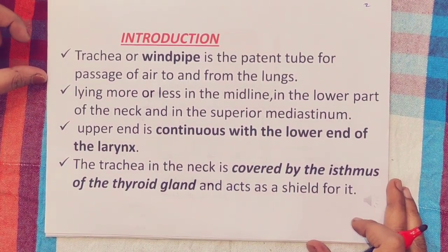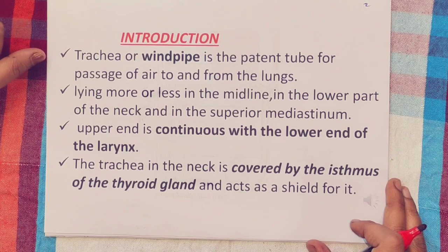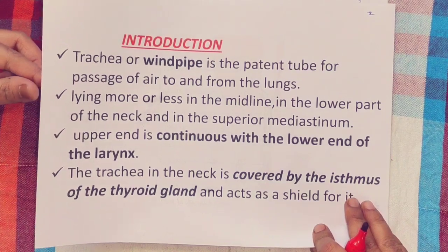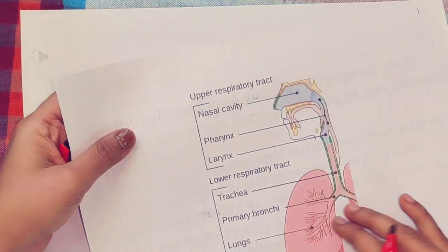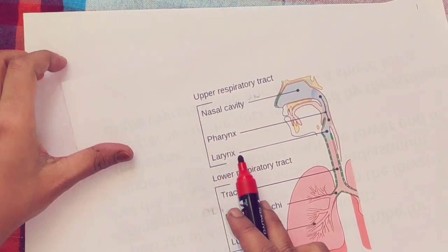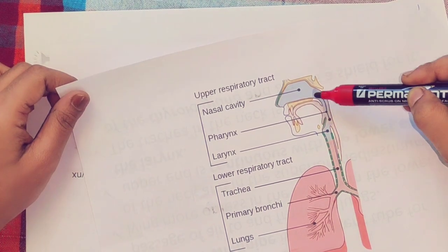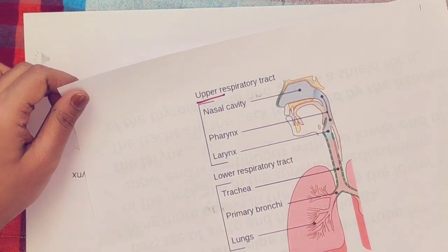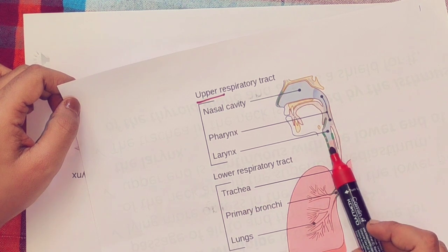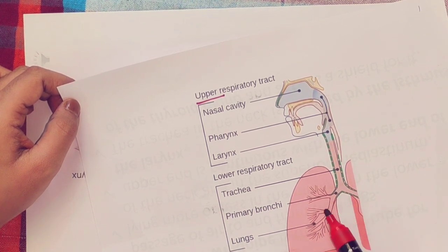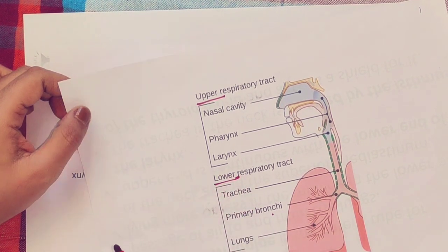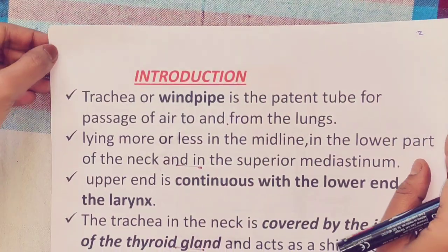Welcome back to the channel. We will see the anatomy of the trachea. We need to know what is the upper respiratory tract and what is the lower respiratory tract. The nasal cavity, pharynx, and larynx compose the upper respiratory tract. Below the larynx is the trachea, which divides into the right and left primary bronchi leading to the lungs — these form the lower respiratory tract.